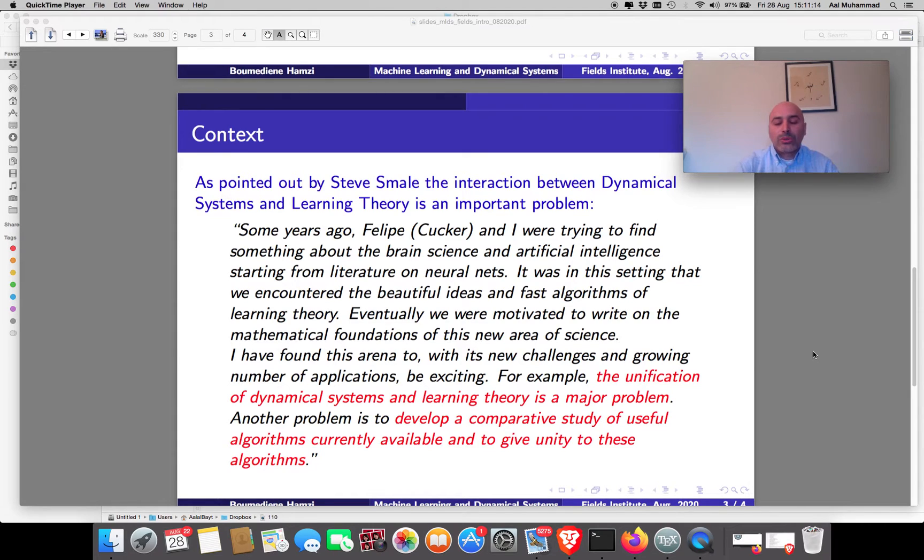The unification is also important from the point of view of philosophy of science, because most of the scientific methods in the modern world are based on combining empirical methods and rational methods. In our case, the dynamical system theory is viewed as the rational part and machine learning is viewed as the empirical part since it's data-based.